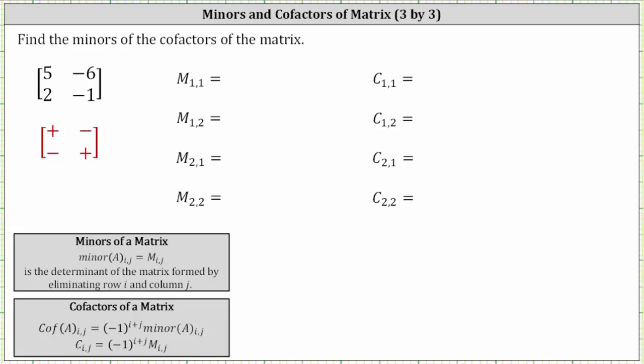We're asked to find the minors and the cofactors of the given two by two matrix. The minor i comma j is equal to the determinant of the matrix formed by eliminating row i and column j from the original matrix. So for example, minor one comma one is equal to the determinant of the matrix formed by eliminating row one and column one from the given matrix.